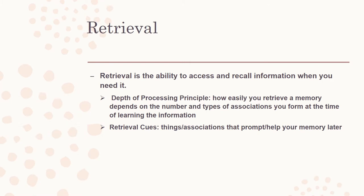Retrieval is the ability to access and recall information when you need it. The depth of processing principle states that how easily you retrieve a memory depends on the number and types of associations you form at the time of learning the information. Retrieval cues are things or associations that you use to prompt your memory later.